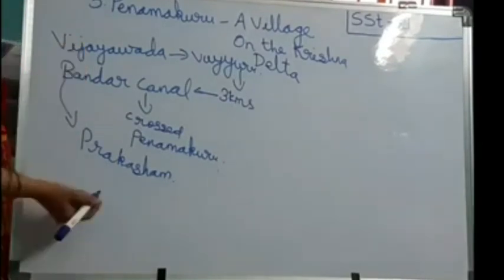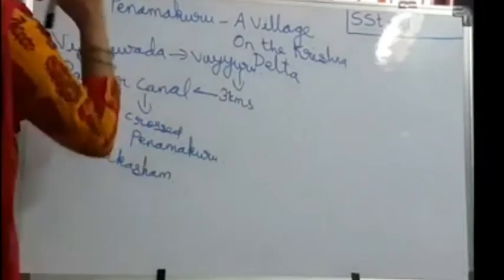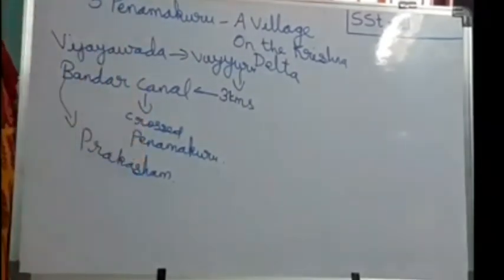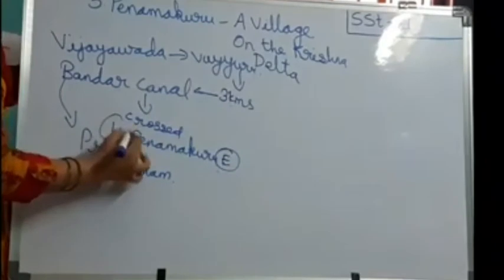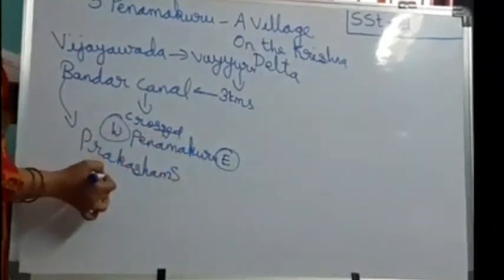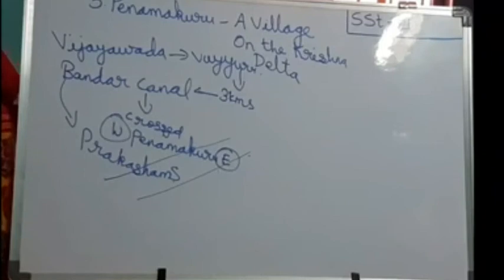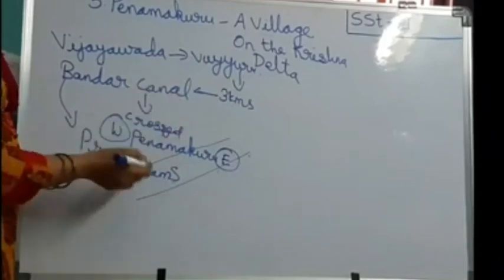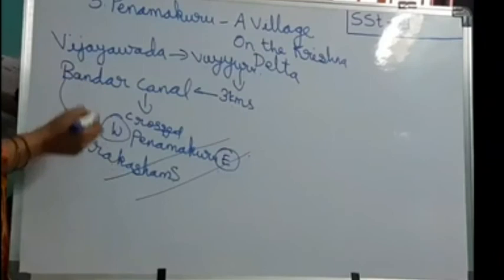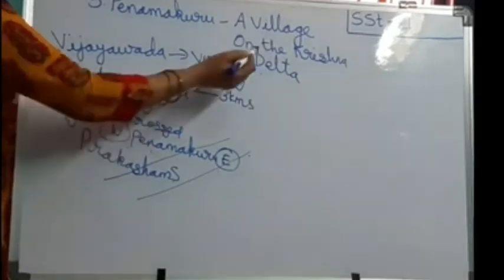It flows from the west of the village. If Penamakuru village is here, this is east, this is west, this is north, this is south. The water from the west side flows towards the southeast, in the southwest direction — the canal water. Penamakuru village is exactly situated between the Krishna River, which flows a few kilometers to the west of the village, and the Bandar Canal. This village is on the delta landform.